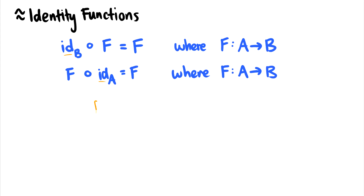It's like if I take f of one and send it to one, take f of two and send it to two, and so on — for any n it just equals n. It's an identity function, very similar to identity elements.